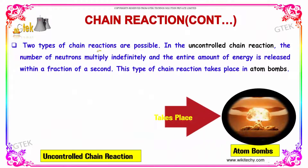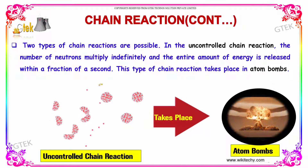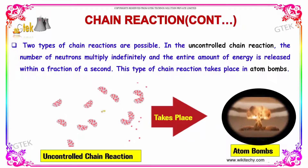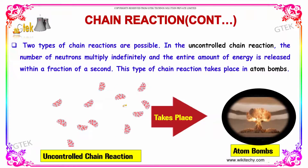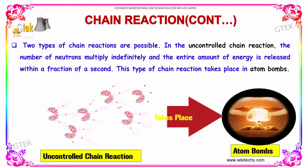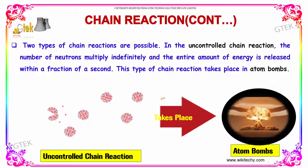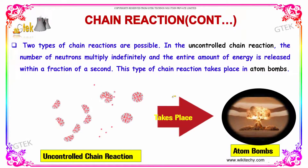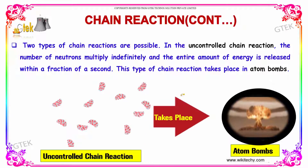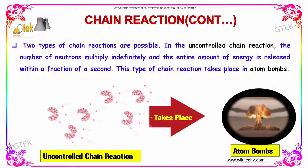Two types of chain reactions are possible. In the uncontrolled chain reaction, the number of neutrons are multiplied indefinitely and the entire amount of energy is released in a fraction of a second. This type of chain reaction takes place in atom bombs. This is referred to as an uncontrolled chain reaction.